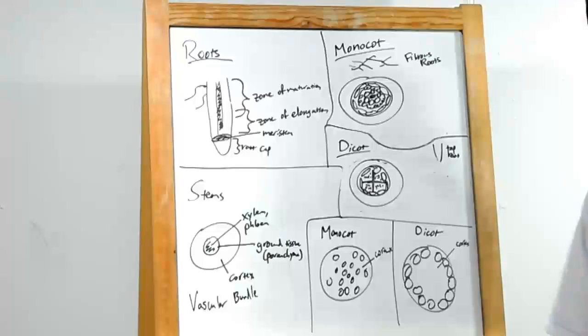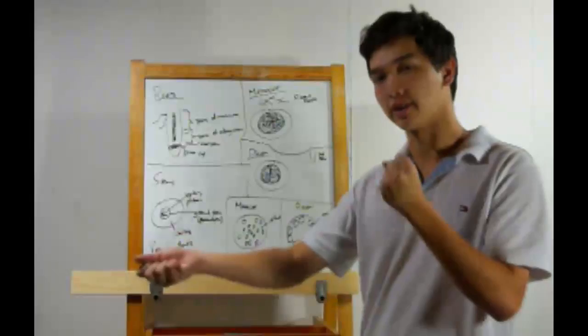At the bottom, we have a root cap. This is a hardened group of cells that's going to be doing a lot of the pushing when the root elongates. It also secretes lubricant so that the root can move more easily through the soil.